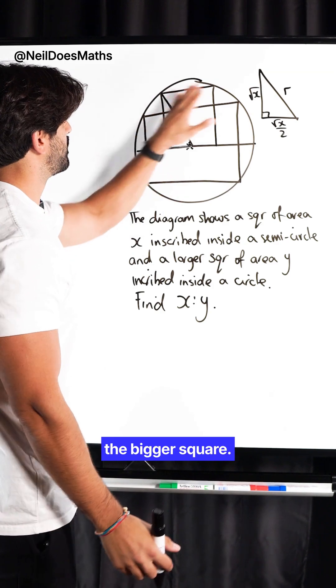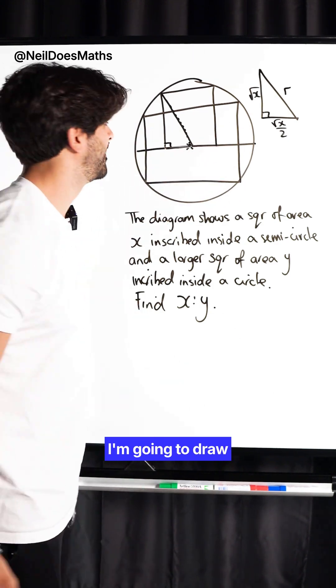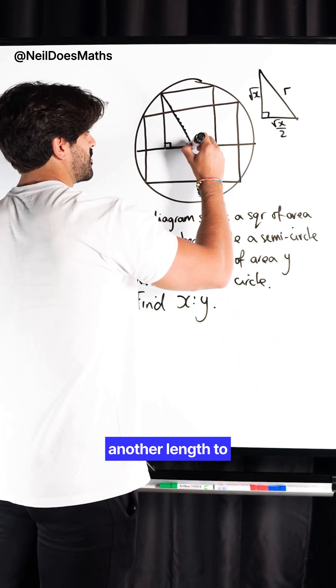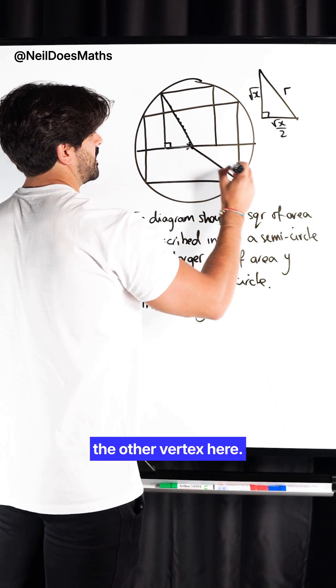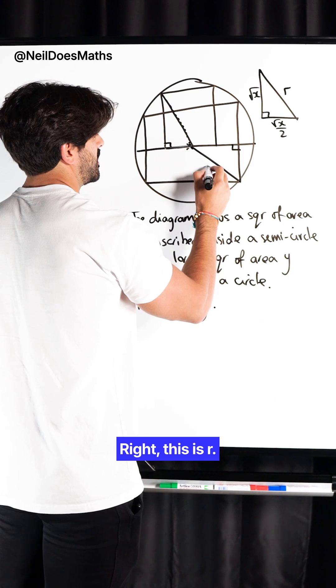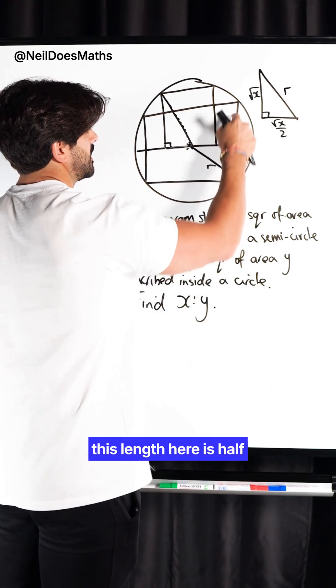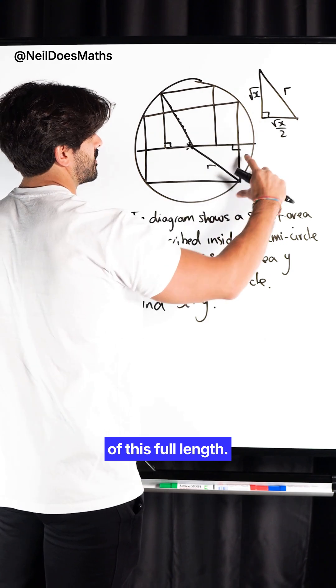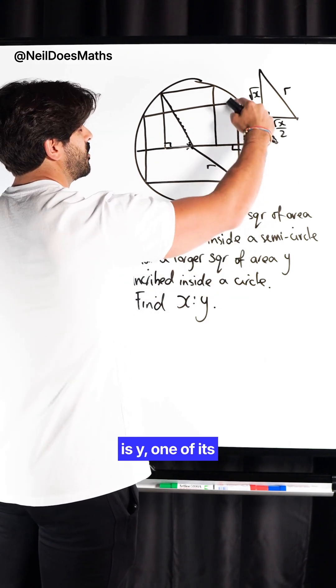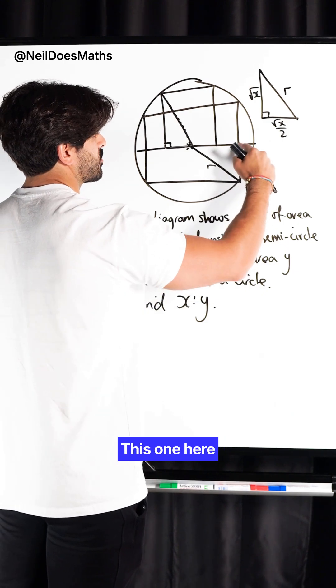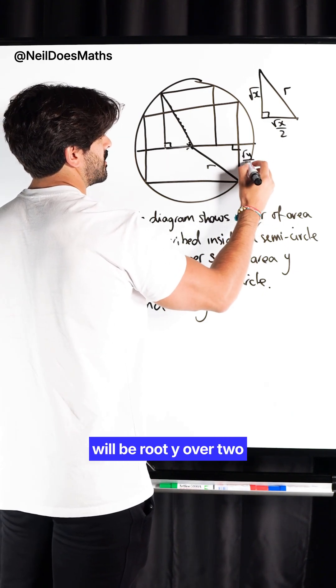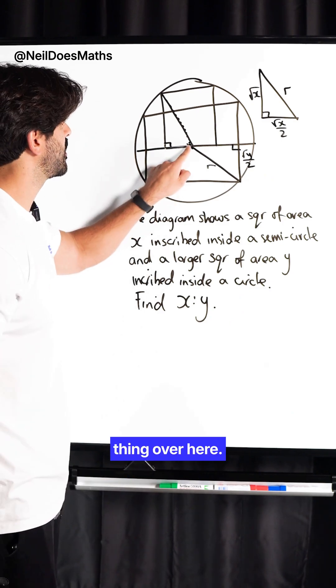Okay, now let's do the same thing with the bigger square. I'm going to draw another length to the other vertex here. And again, I have a right-angled triangle. This is R. And similarly, this length here is half of this full length. Because the area is Y, one of its lengths is root Y. This one here will be root Y over 2. And the same thing over here.